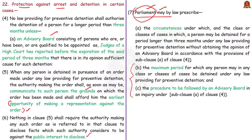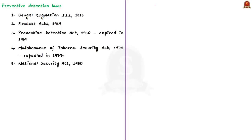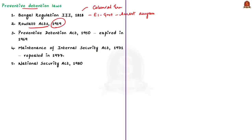Based on these constitutional provisions, many preventive detention laws were made by Parliament. Interestingly, preventive detention laws are not new in India. Their existence dates back to the early days of the colonial era, when Bengal Regulation No. 3 of 1818 was enacted. This regulation empowered the East India government to arrest anyone for defence or maintenance of public order without giving the person an opportunity to approach the court against the detention. A century later, the British government enacted the Rowlatt Acts of 1919 that allowed confinement of a suspect without trial.